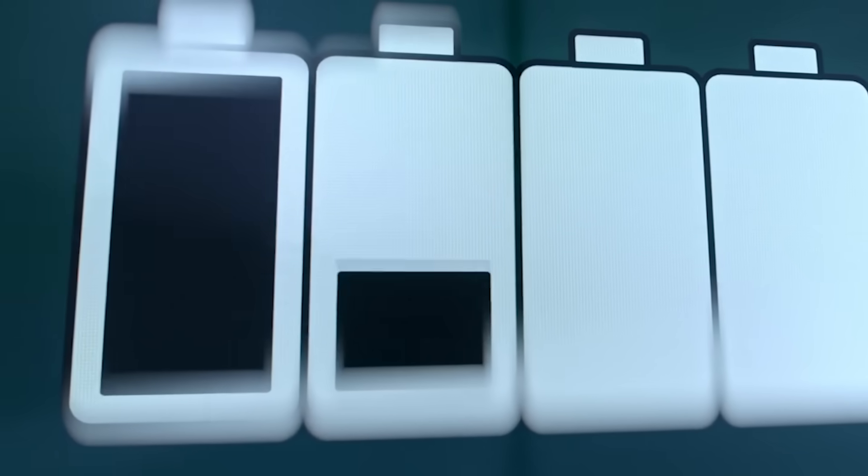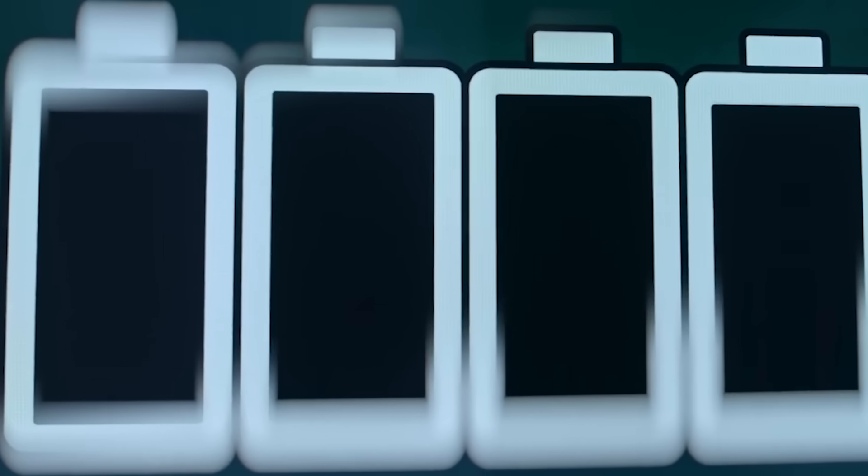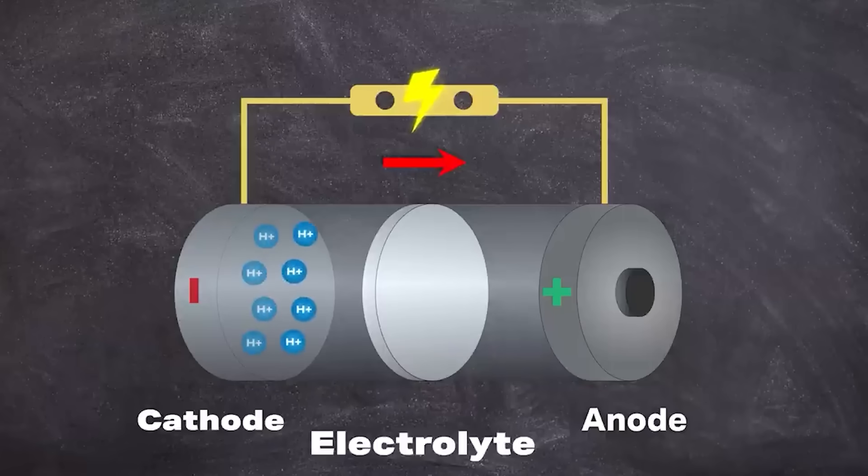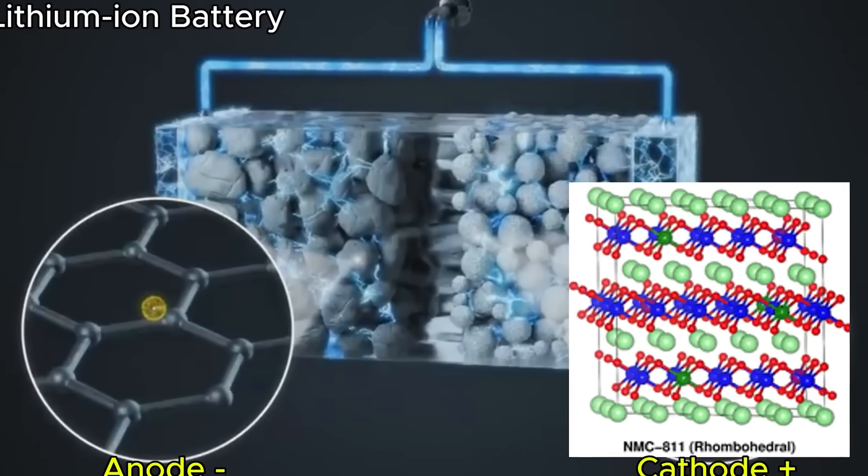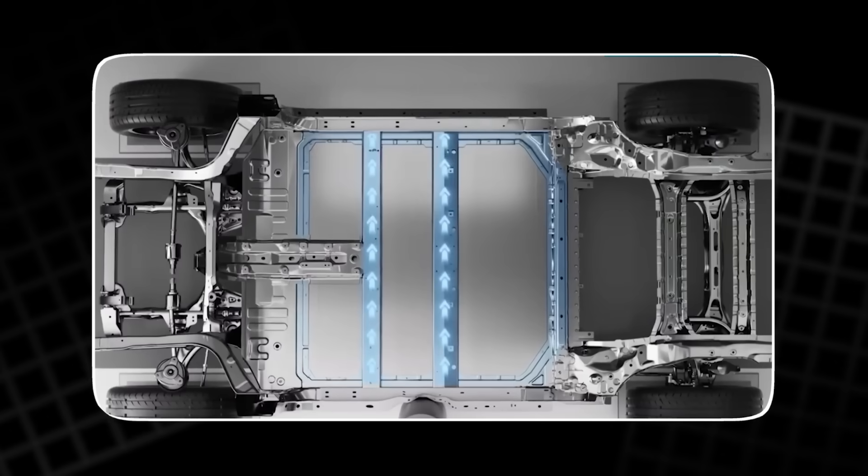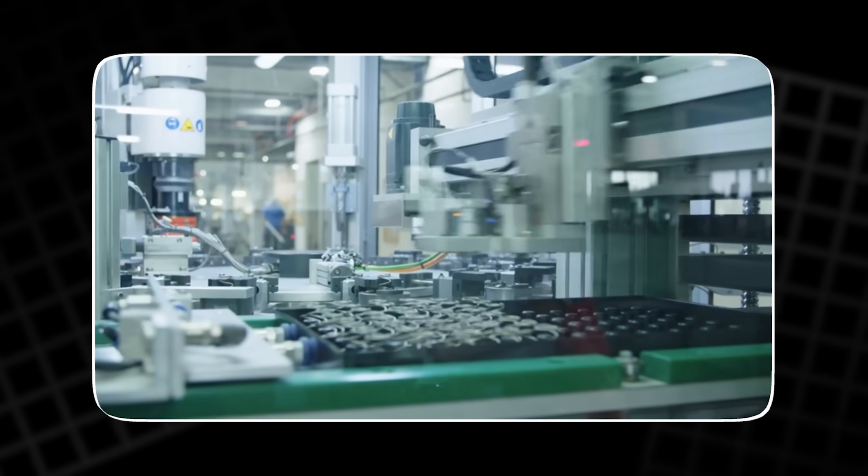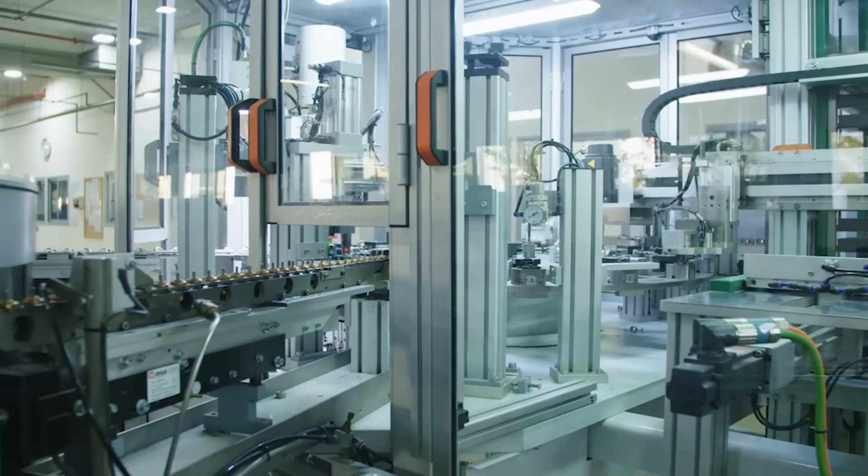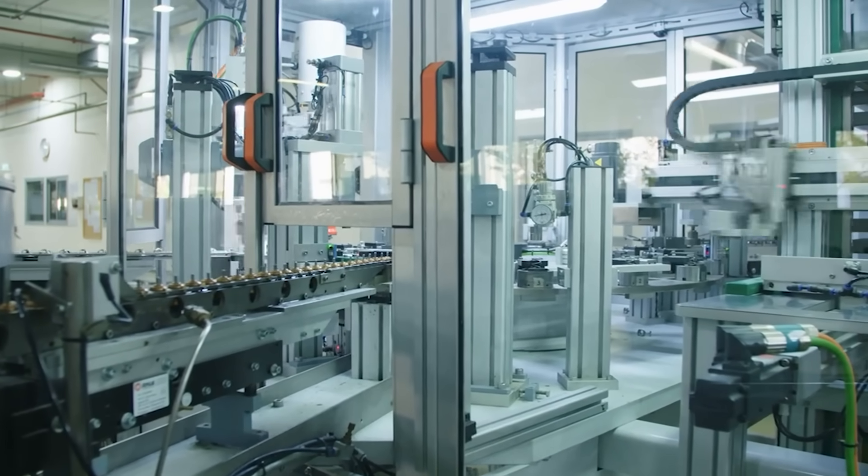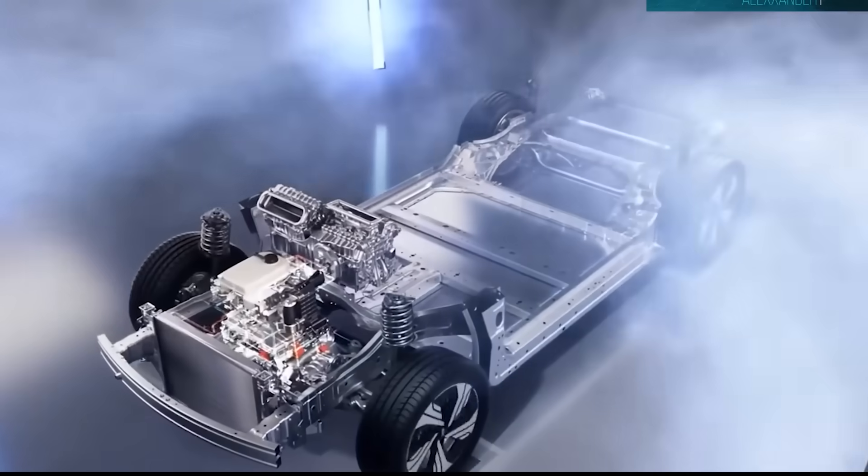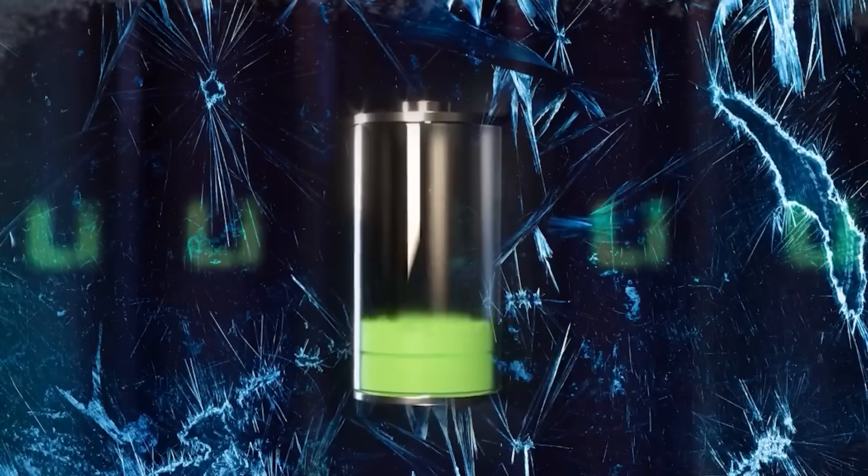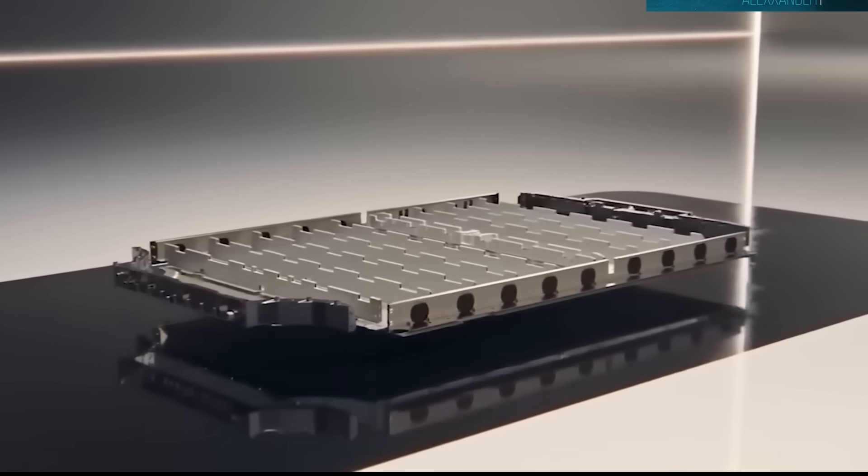Another challenge is measuring the true energy density of the entire cell. We currently know the specific capacity of the anode, but not the combined performance of both electrodes. Without that, it's hard to compare directly with commercial lithium-ion cells that already achieve high energy densities. Scaling up production is another barrier. Manufacturing organic electrodes at large volumes will require new techniques and new equipment. Recycling systems and end-of-life strategies must also be developed before the technology becomes mainstream.